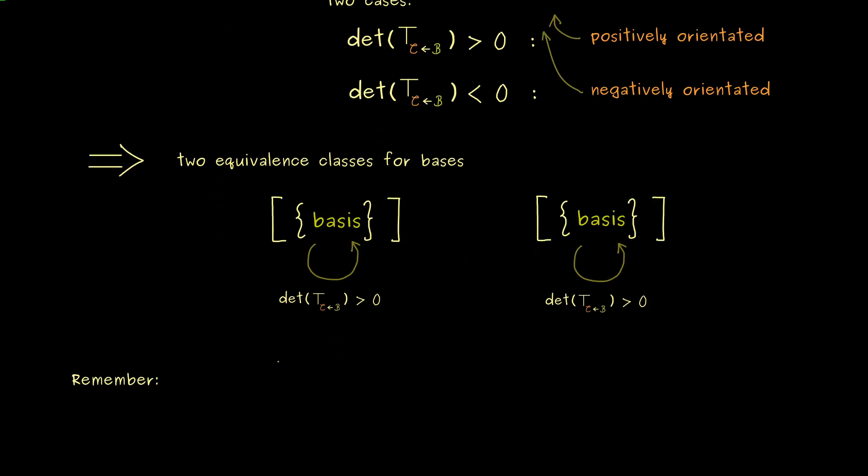And now for the rest of the video, you should remember, if we have a vector space and choose one of the two equivalence classes, then we have a so-called orientation. So for example, the positive orientation we have for ℝⁿ is the equivalence class where the standard basis is inside.